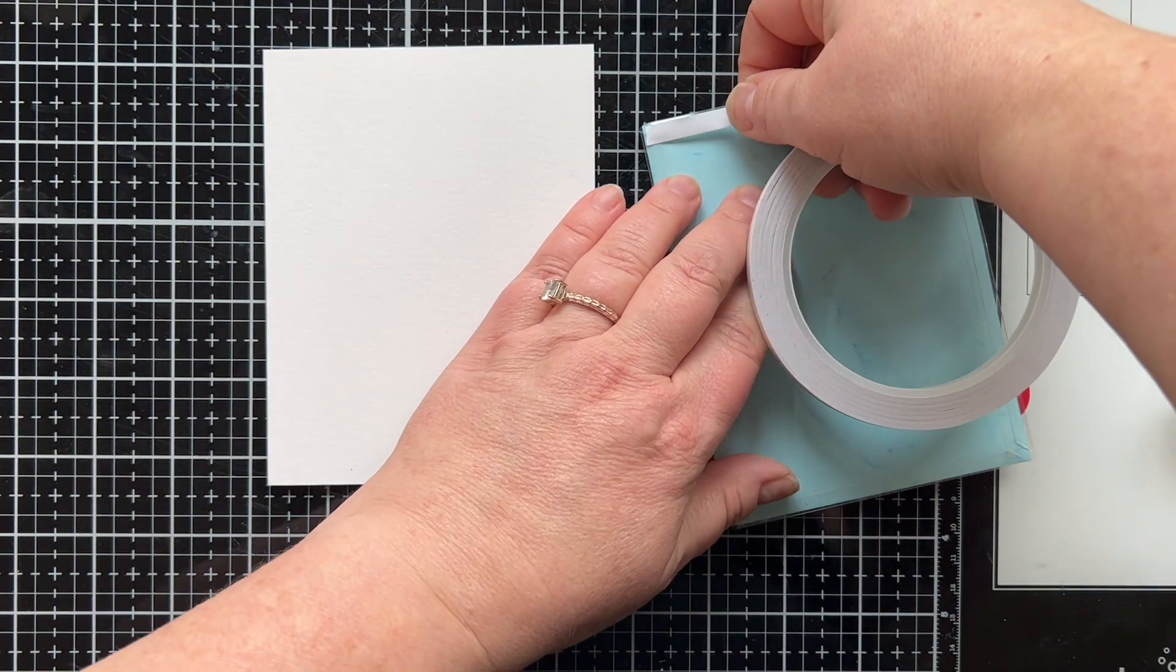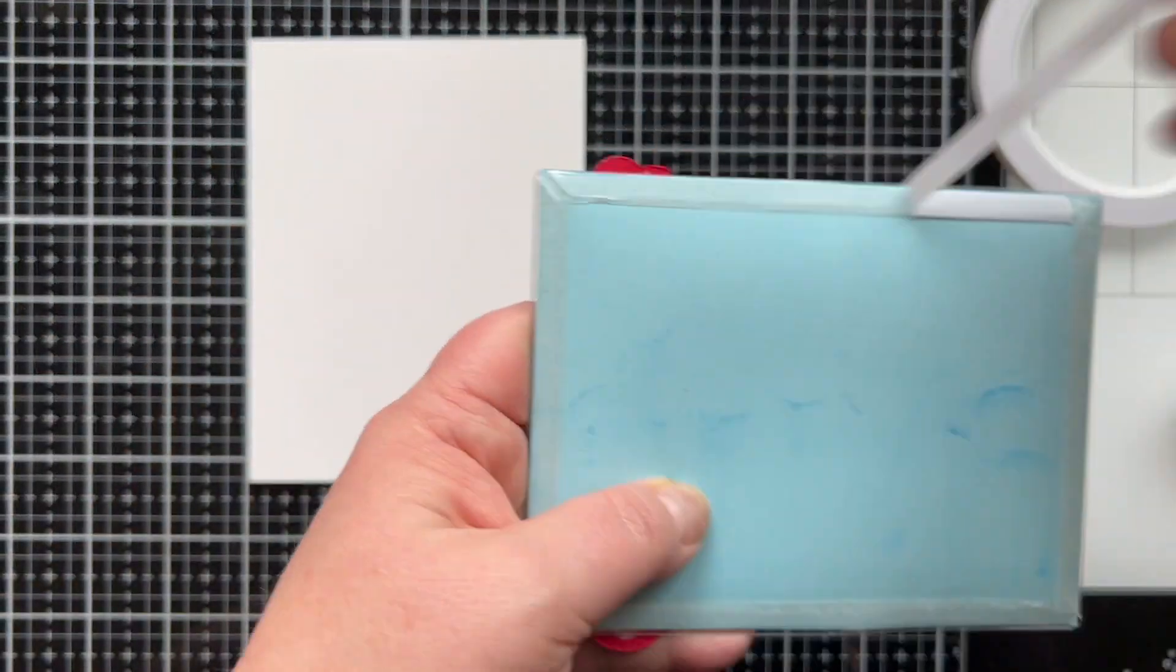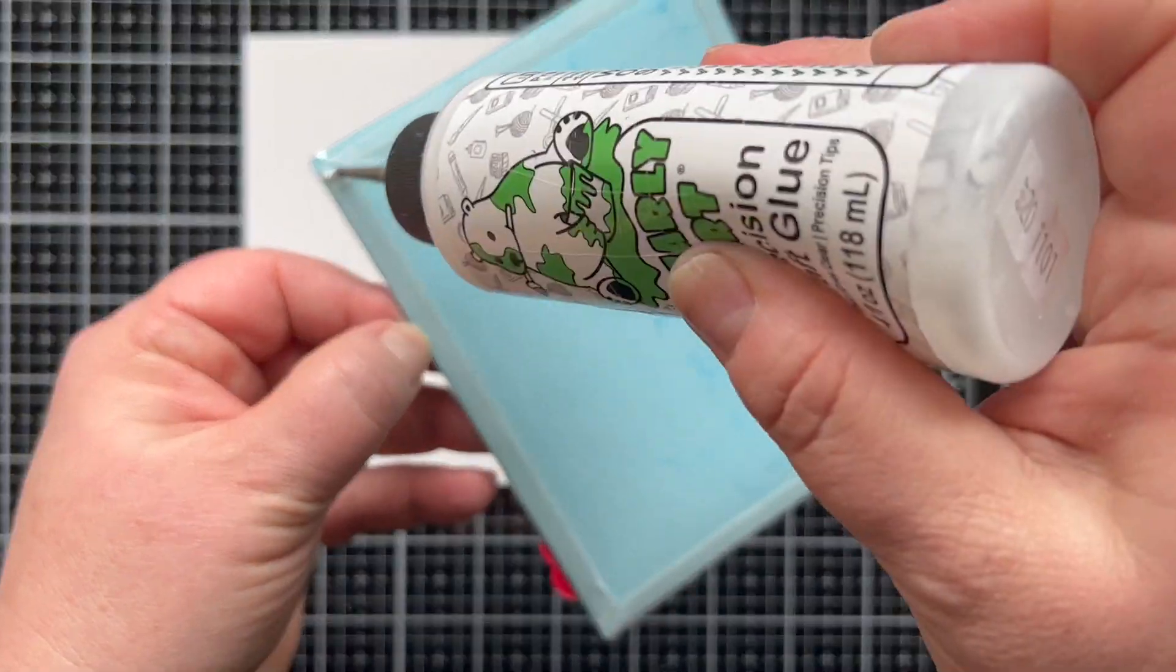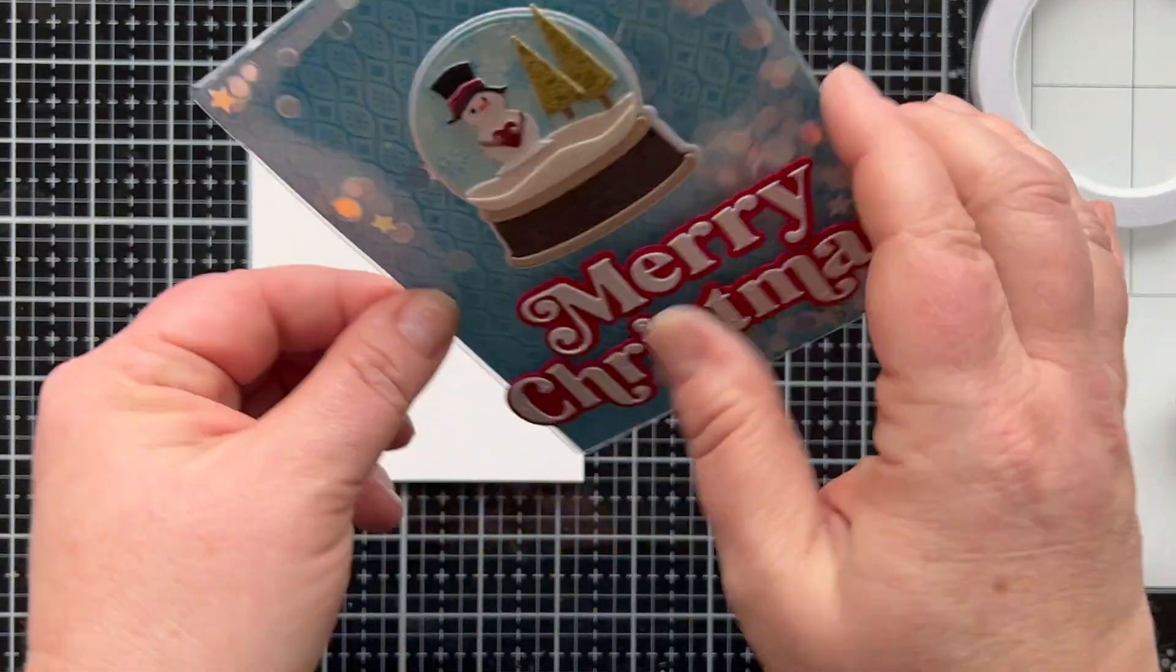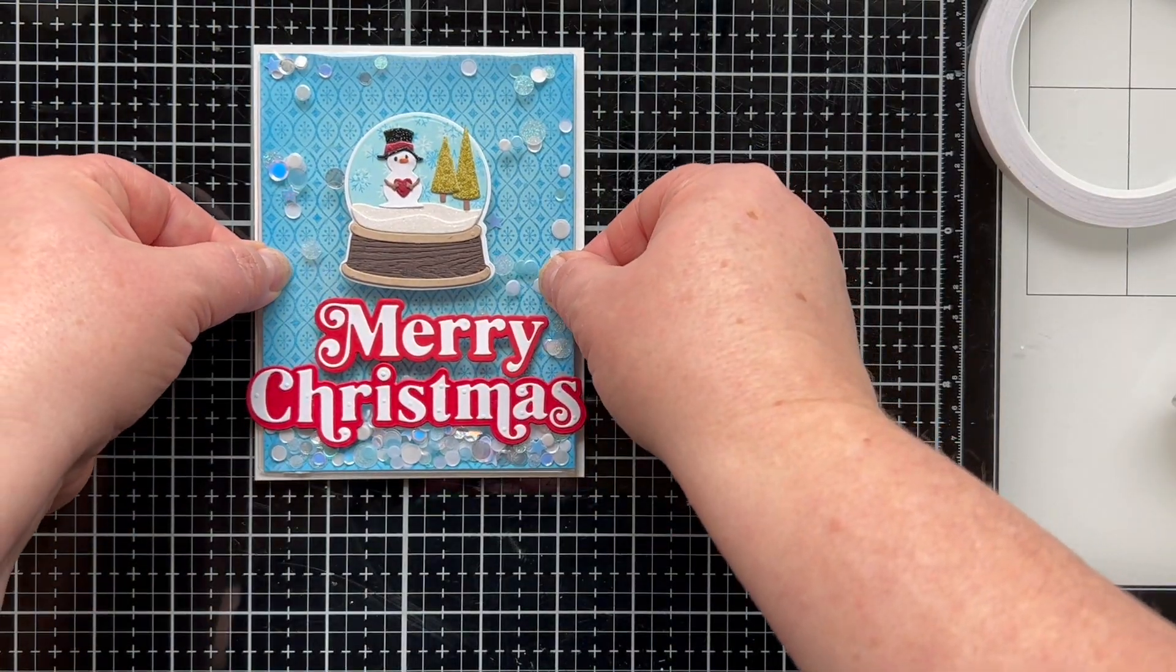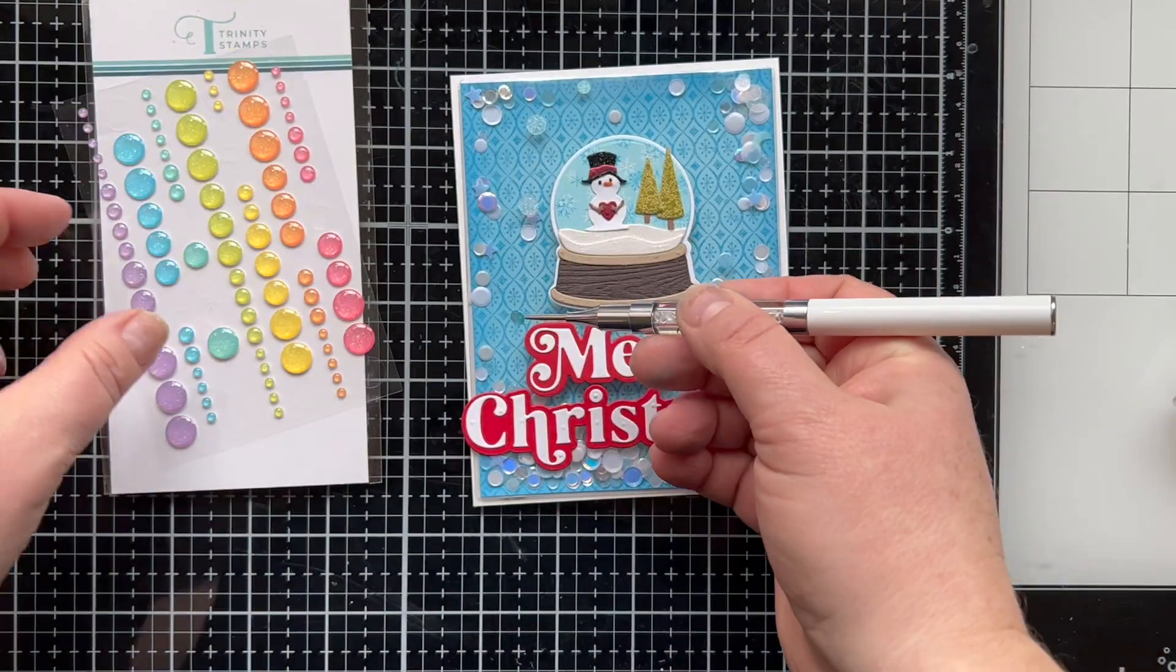Now we're gonna stick this down to our A2 size card base. Remember I will have a border of that showing all the way around. So to stick this down I went over those seams of my paneled shaker pocket with rip and stick tape, added some liquid glue, and then center that so you've got white border all the way around.